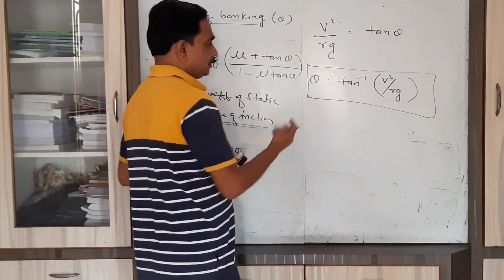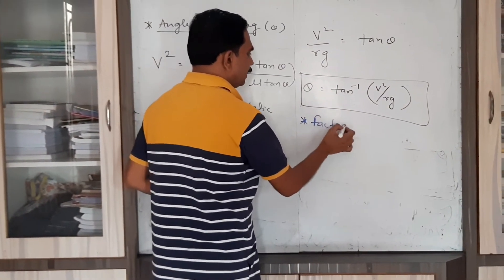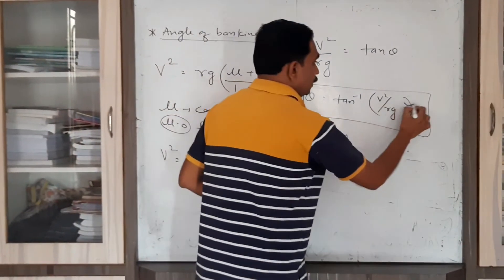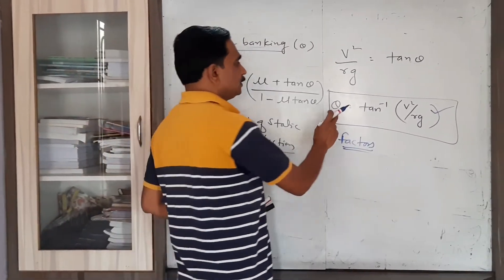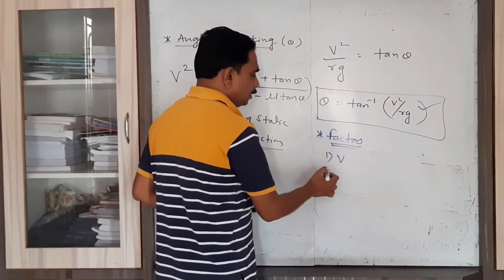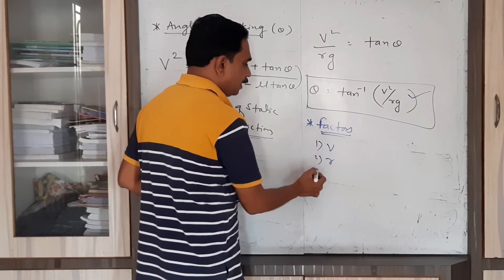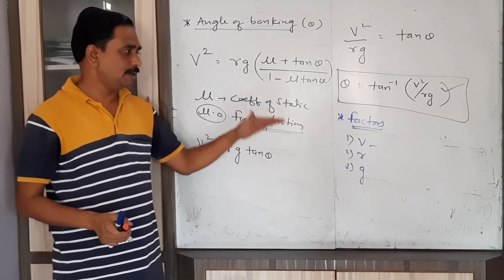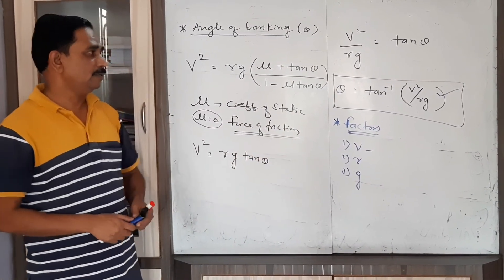Sometimes the factors on which the angle of banking depends are asked. From the expression theta equals tan inverse of v²/Rg, you can clearly observe that it depends upon three factors: V, R, and g — where V is the maximum speed of the vehicle, R is the radius of the circular road, and g is the acceleration due to gravity.